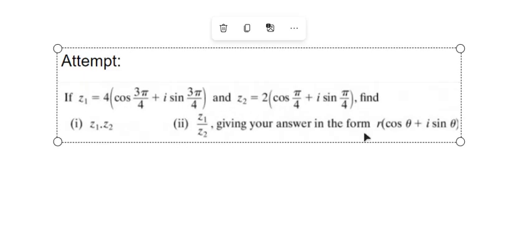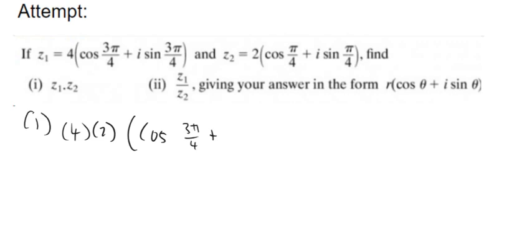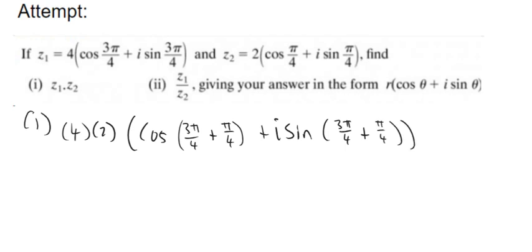Here's another one — you can try this yourself if you want, just pause the video. For the first part, multiplying the two of them: it's going to be 4 times 2 outside, and then cos of 3 pi over 4 plus pi over 4, plus i sine of 3 pi over 4 plus pi over 4. So 4 times 2 is 8 outside. You don't even need a calculator because they have the same denominator — 3 pi plus pi is 4 pi, so it's 4 pi over 4, which equals pi. So the answer is 8 times the quantity cos pi plus i sine pi.